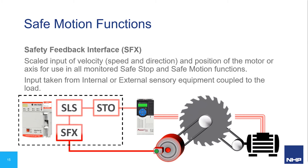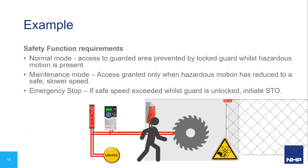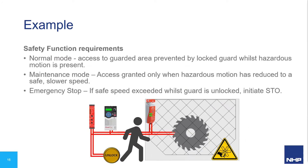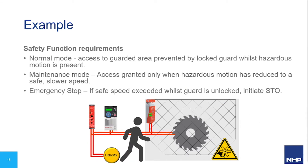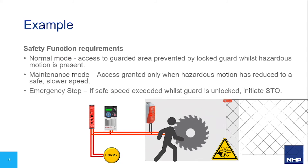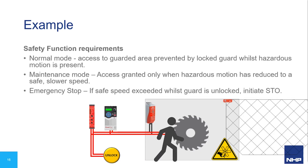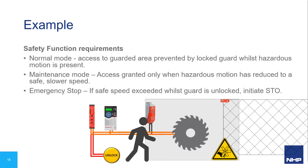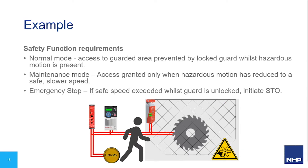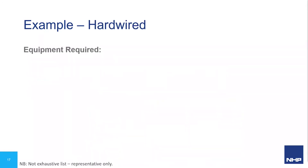Let's put these safe stop and safe motion functions into practice with an application example using off-the-shelf products. In this example, we performed a risk assessment and defined modes of use: Normal mode, Maintenance mode, and Emergency mode. The hazardous motion during normal mode presents an intolerable risk, so access is restricted by a movable safeguard which is monitored and locked shut. We only need to slow the machine down if access is required for maintenance — allowing us to keep the machine running while we have access through the guards. If a fault occurs and the machine suddenly speeds up while guarding is unlocked, we need to initiate an emergency stop and remove power as quickly as possible.